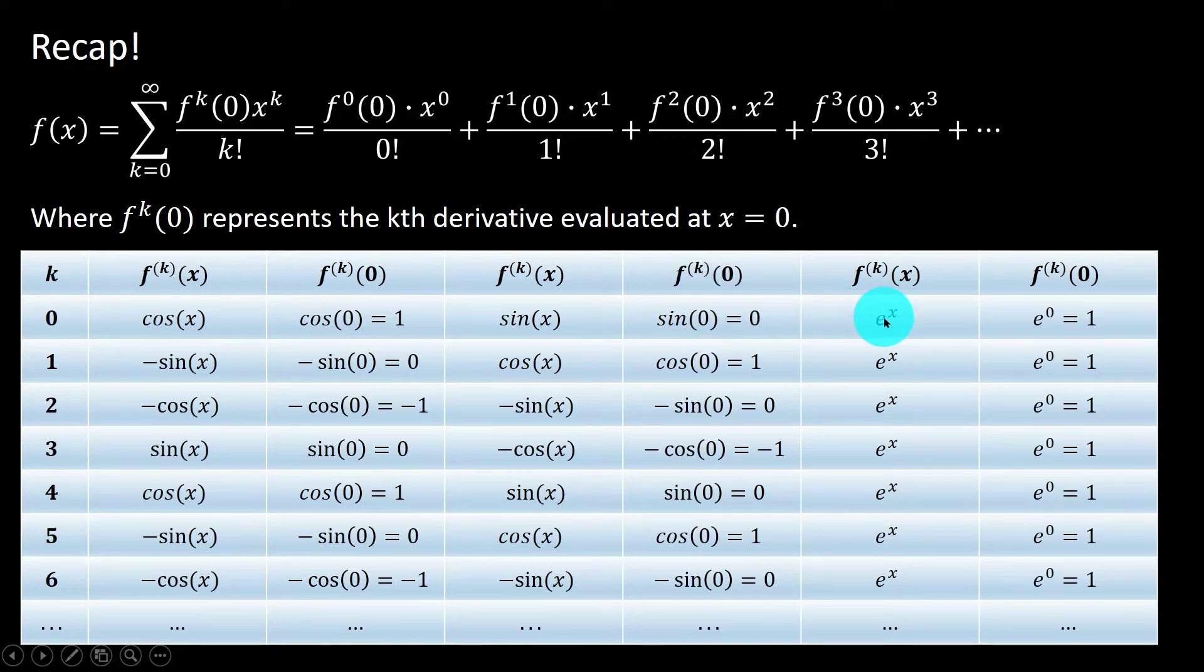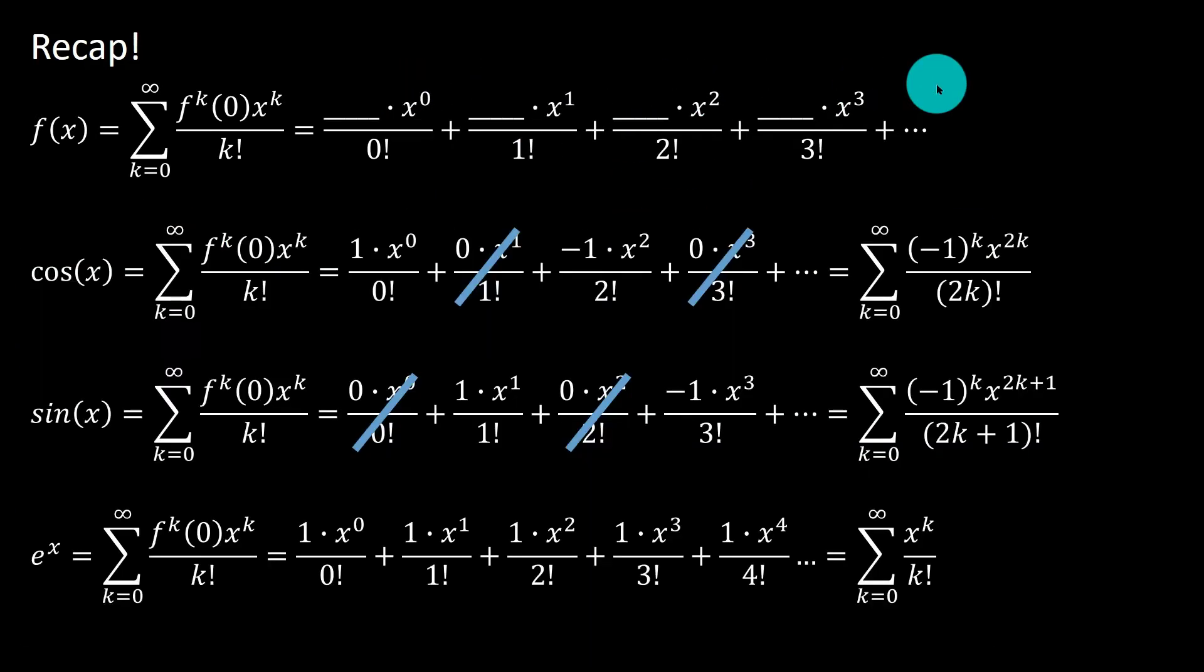And of course, e to the x derivative is always e to the x, and e to the x at 0 is always 1. So you just plug in 1 as every coefficient, and you get every term of the series. As a brief recap, you'll see here we arrived at three very common Maclaurin series that you need to have memorized. For cosine, we get all the even powers over the even factorials with alternating sign. For sine, we see the coefficients of the even terms are 0, leaving only the odd terms and alternating sign. And then e to the x has a 1 for every single term.